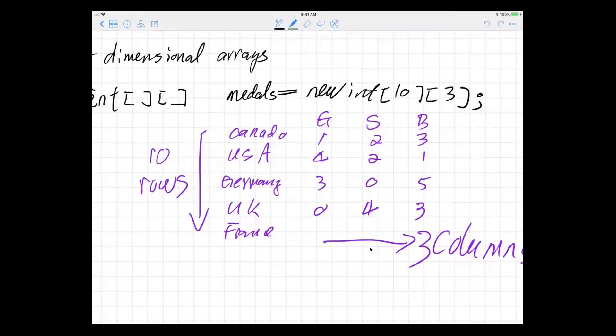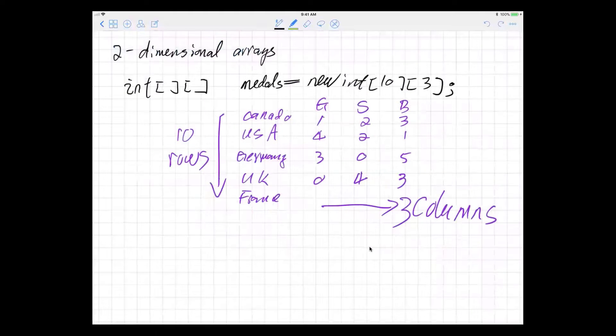And then we can put the numbers. Let's say gold is Canada has one, two, three. USA has four, two, one. So when we declare this matrix with the numbers, the rows are the countries and the columns are the medals.